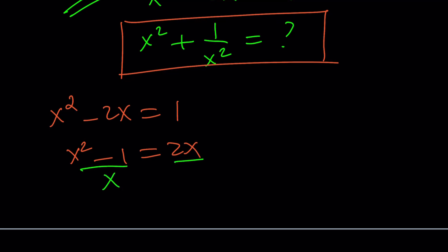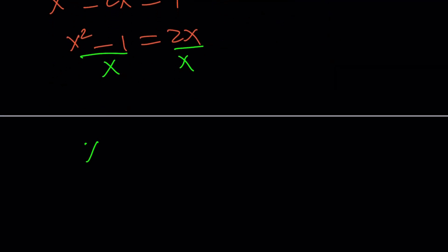We're doing this because this is going to give us x minus 1 over x equals 2. Obviously, x equals 0 does not satisfy the original equation, so we're allowed to divide by x, which can't be 0 anyways.